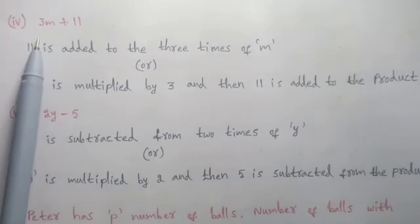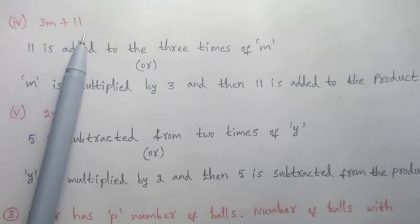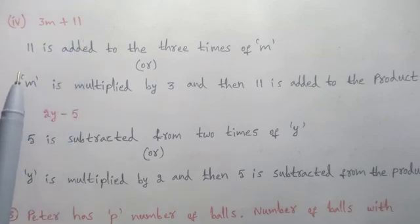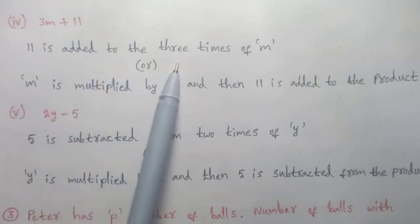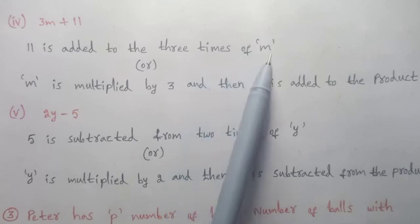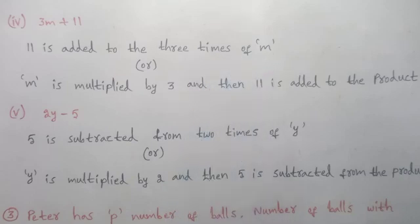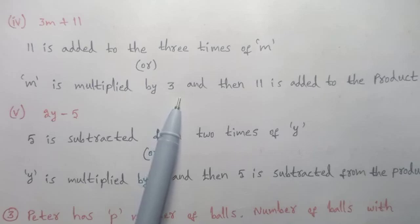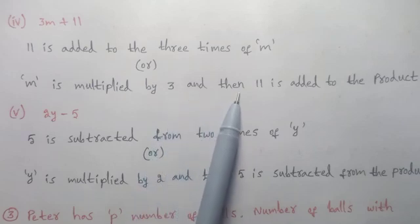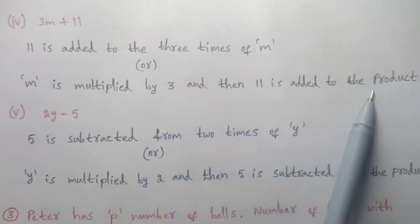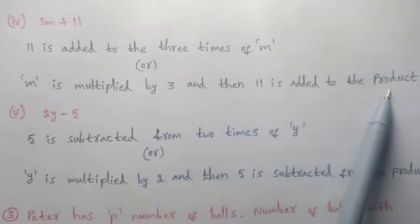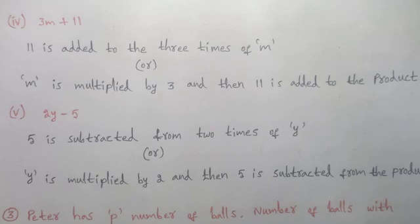Fourth expression: 3 into m plus 11. First sentence: 11 is added to 3 times of m. Second sentence: m is multiplied by 3 and then 11 is added to that product.